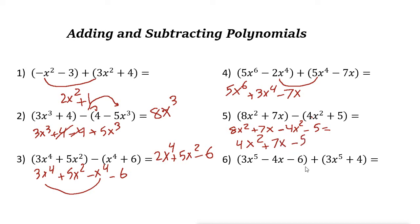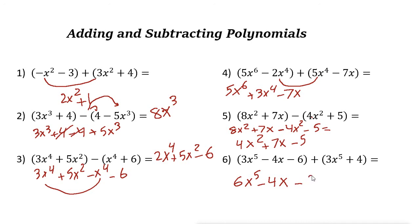This last one is addition. 3x⁵ plus 3x⁵ is 6x⁵. Then we have negative 4x. For the constants, negative 6 plus 4 gives minus 2. So the final answer is 6x⁵ minus 4x minus 2.